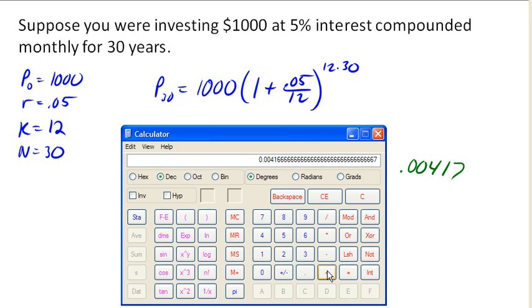and now raise it to the power of, let's see here, 12 times 30 is 360. So I'm sort of pre-multiplying that, and now multiply that by 1,000, and I've come up with a very exact answer, right?